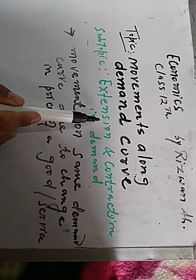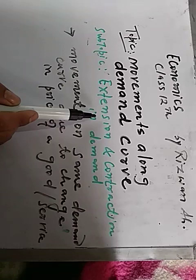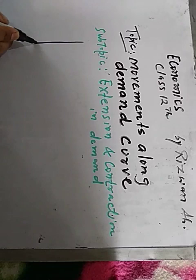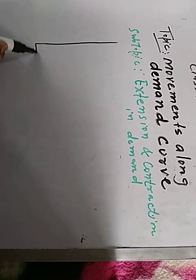Due to change in price of a good or service, this price change leads to extension and contraction in demand. Extension in demand means increase in demand due to decrease in price — due to fall in price. And contraction in demand means decrease in demand due to increase in price.